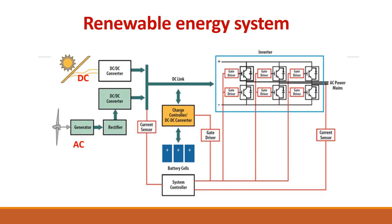The next application is the renewable energy system, which includes solar and wind energy. The output of a solar panel is DC, so this DC voltage is converted to the DC link voltage using a DC-DC converter. A wind generator gives AC output, which is converted to DC using a rectifier. To charge a battery of 12 volts from a 48-volt DC link, another DC-DC converter or charge controller is required.